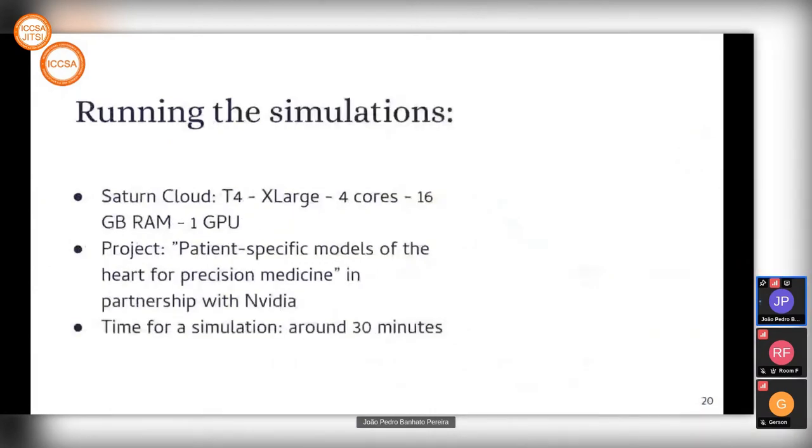To run the simulations, we used the Saturn Cloud T4 XLarge with 4 cores, 16GB of RAM, and 1 GPU. Each simulation took around 30 minutes. We ran about 20 to 30 simulations, with 10 of them testing and correcting values. We took about 10 to 15 hours to run all of our protocol. Most of the time running one simulation is spent solving the ordinary differential equations rather than the partial differential equations.